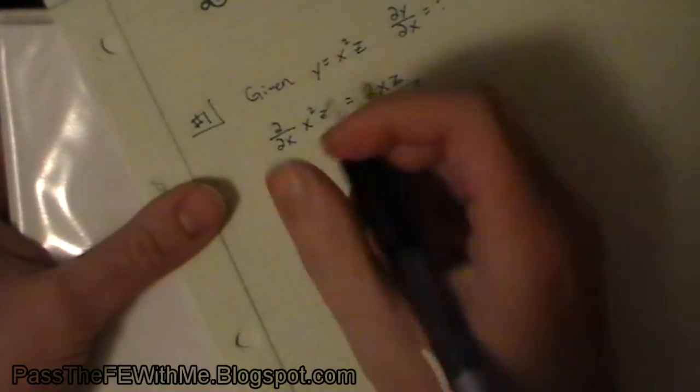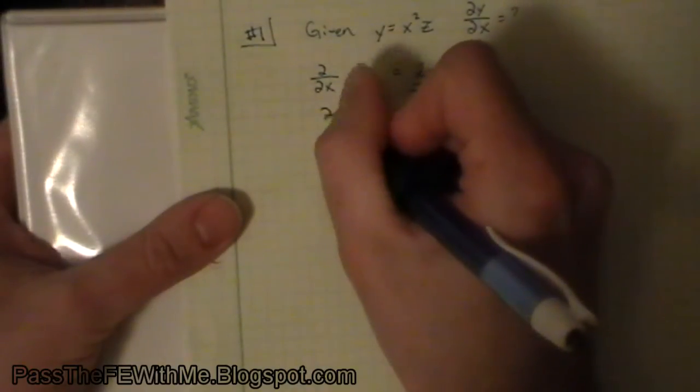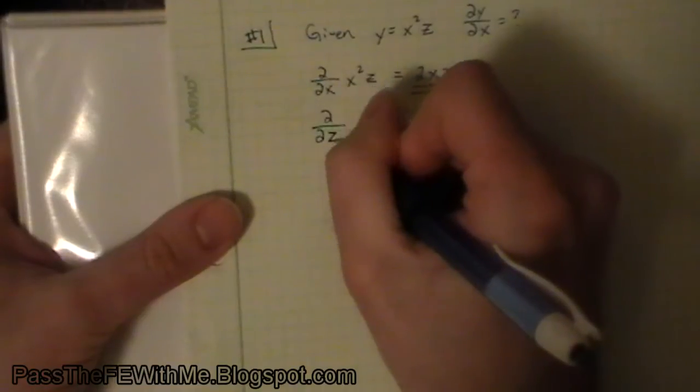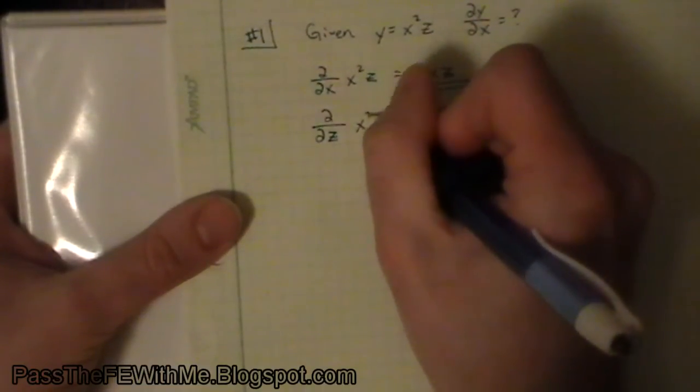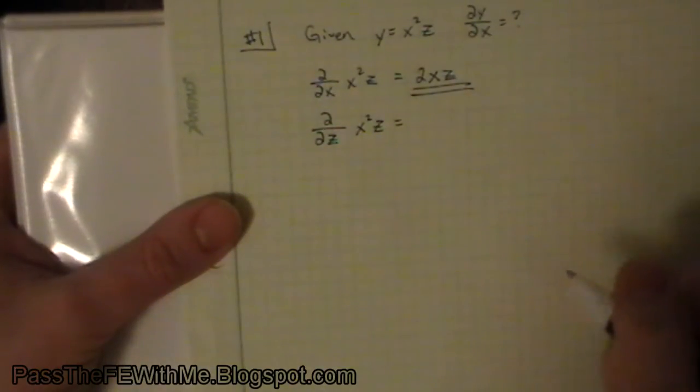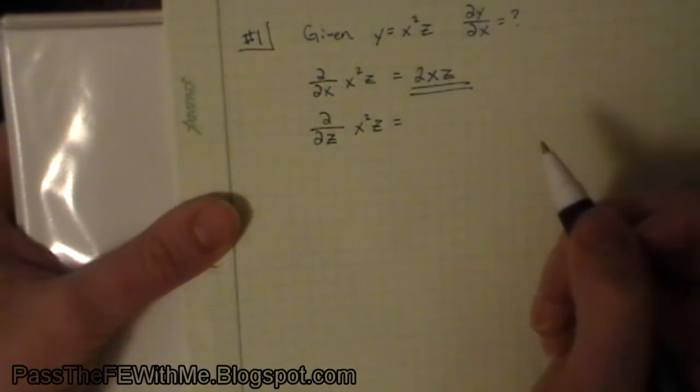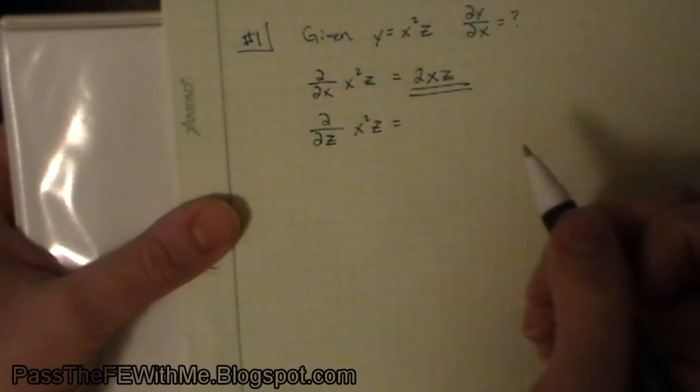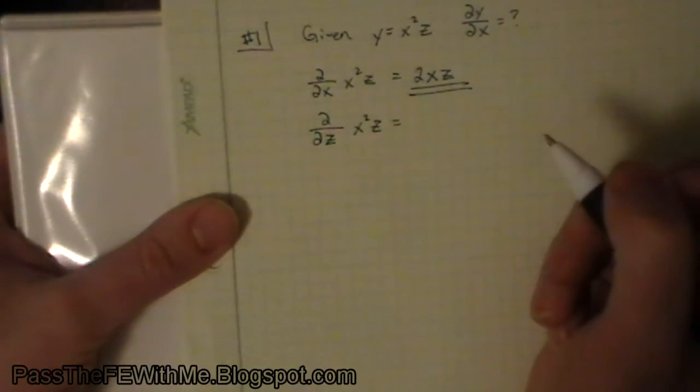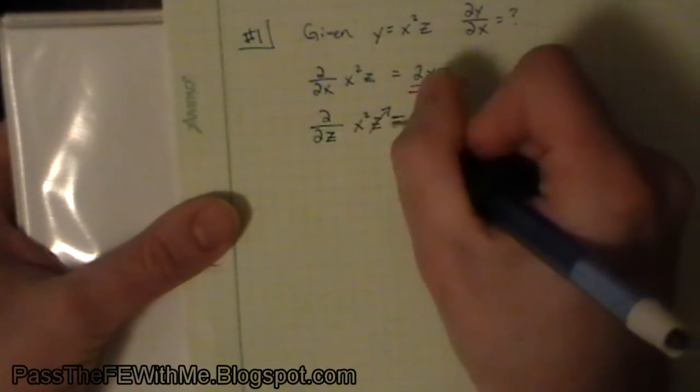Suppose we want to find the partial derivative with respect to z of x squared z. Well again, we're going to treat this x squared just like it's a constant, so we're really only worried about the z here. Since there's just a single z with no exponent, this goes to 1, and this equals x squared.